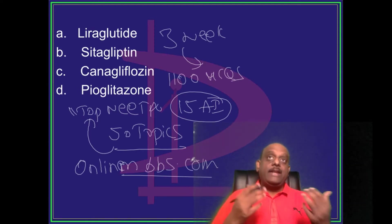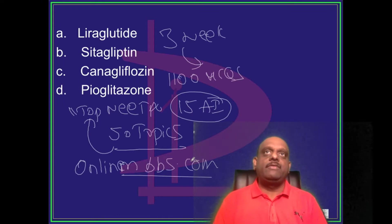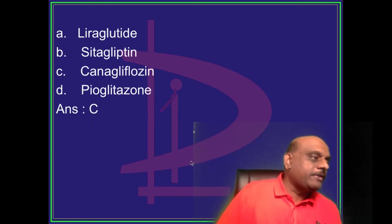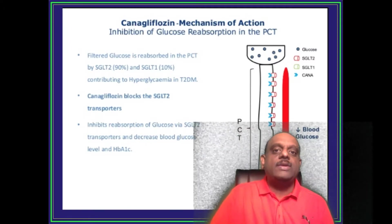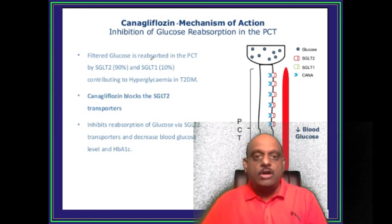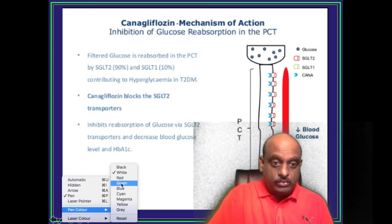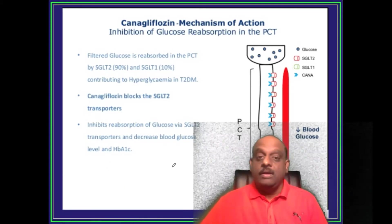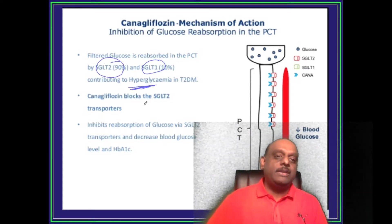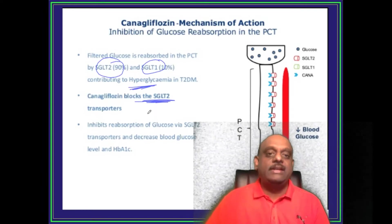Pharmacology is a highly scoring subject, so if you got this wrong, go back to the video library and revise diabetic drugs — a favorite topic of examiners. The answer is canagliflozin. The filtered glucose is reabsorbed in the proximal convoluted tubule via SGLT1 and SGLT2 transporters. Canagliflozin blocks the SGLT2 transporters.